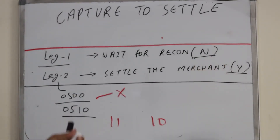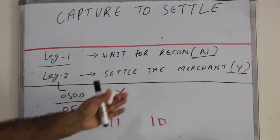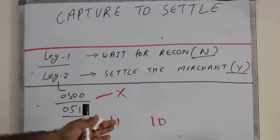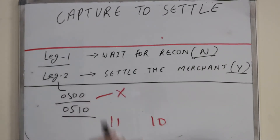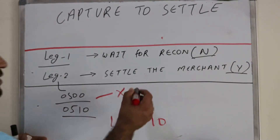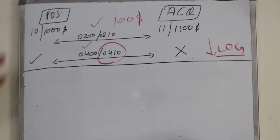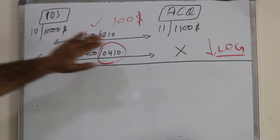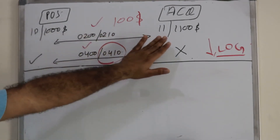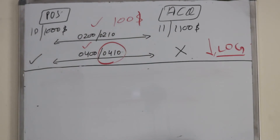We will see an example where one transaction is missing at the POS — the POS has fewer transactions than the acquiring bank. The POS has 10 transactions and the acquiring bank has 11. We need to understand how this scenario happened.